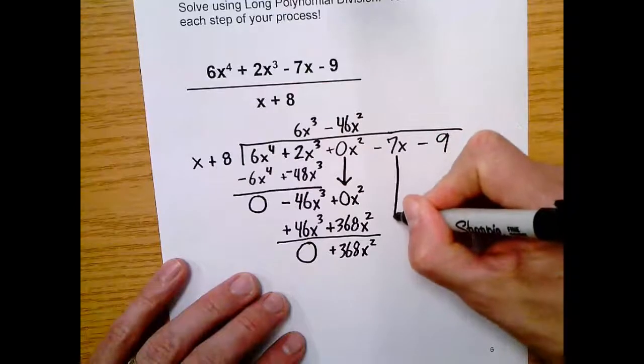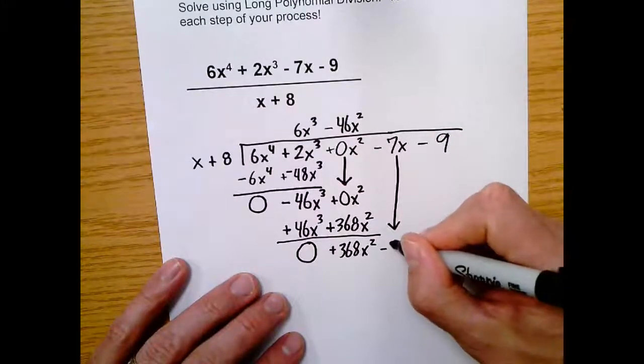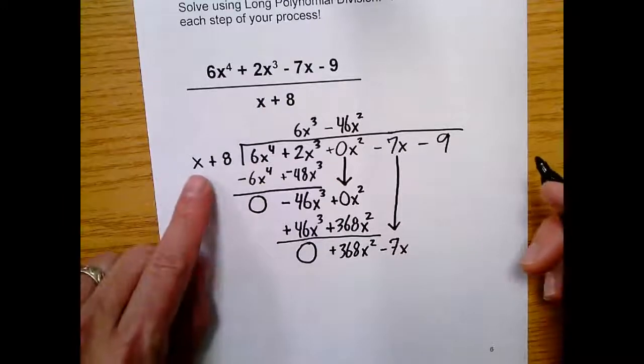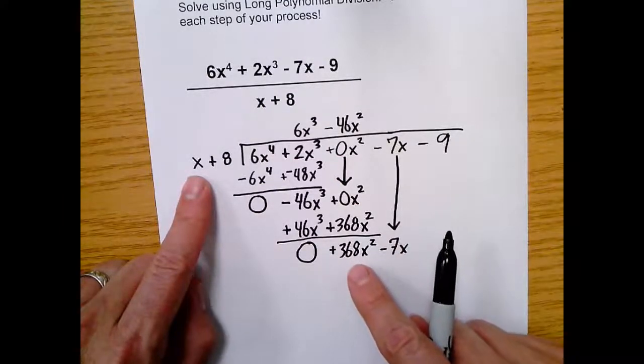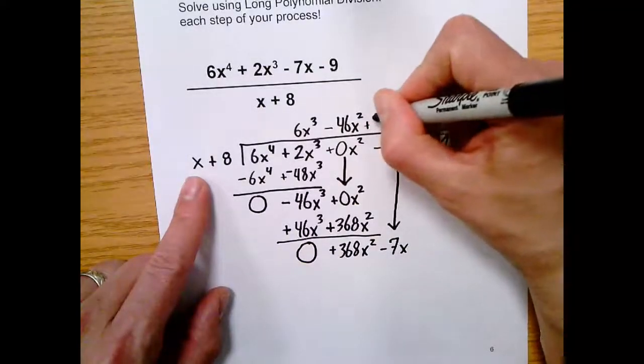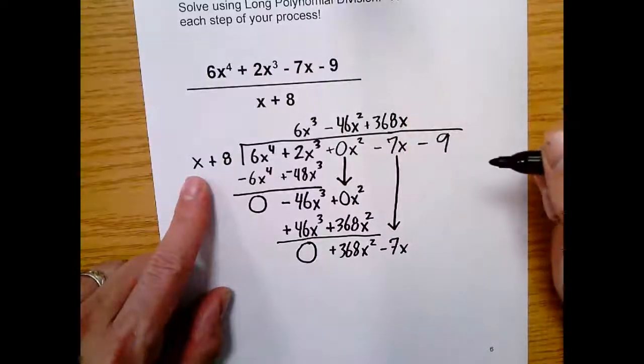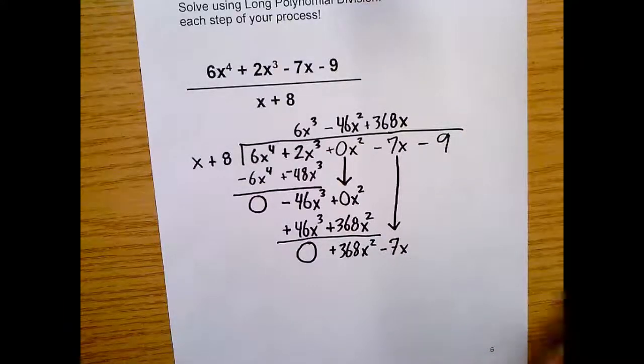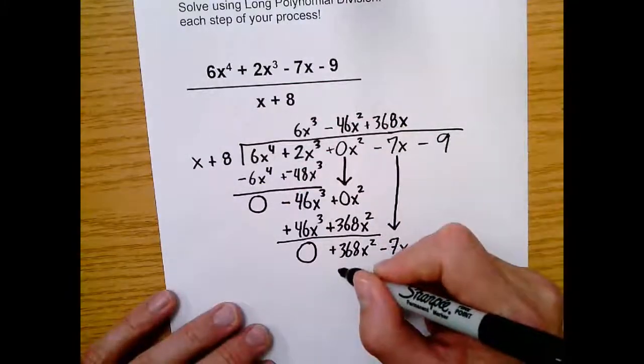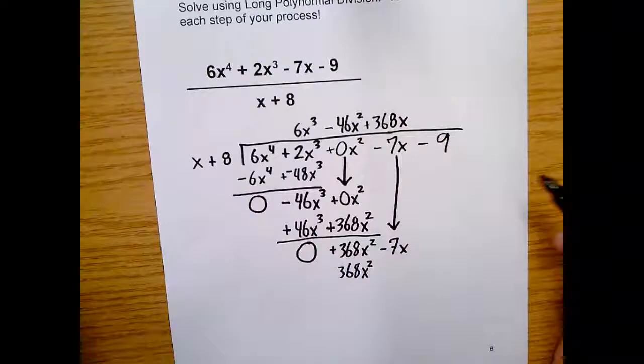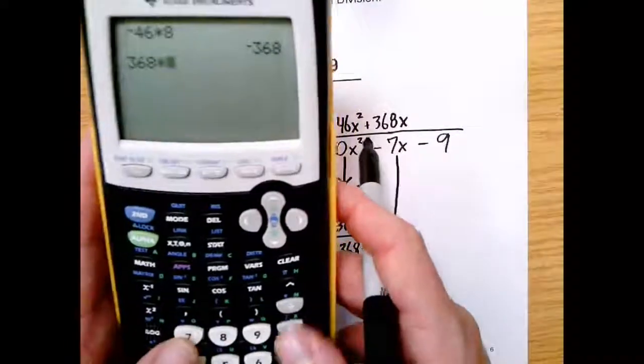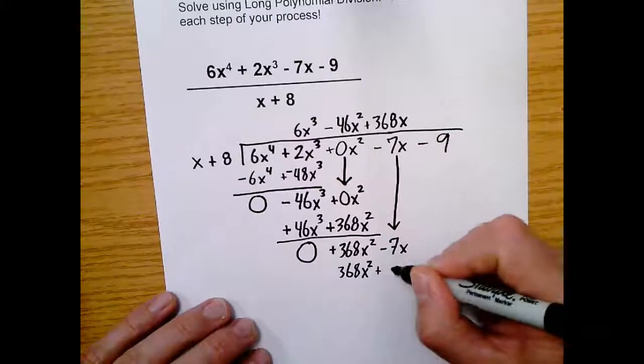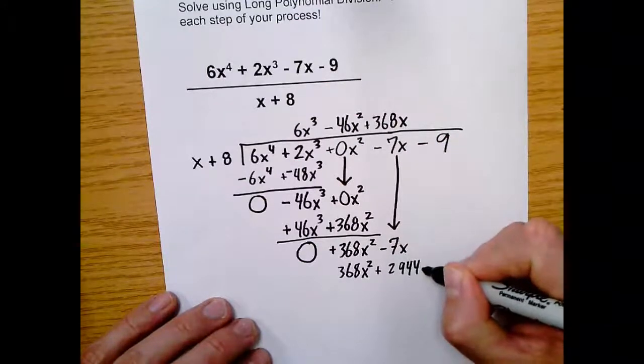So the last step, step 4, bring it down. You get negative 7x. Start the process over. Ask yourself, what does this x have to multiply by to become 368x squared? We'll just multiply it by 368x. And look, you can see it again. This is x to the first, to the first, to the first. So now we're all lined up nicely. It's how you know you're on the right track. So we say 368x times x. That gives us 368x squared. And then we do 368 times 8. Again, I don't know that. So 368 times 8, 2,944. So we get plus 2,944 right there.